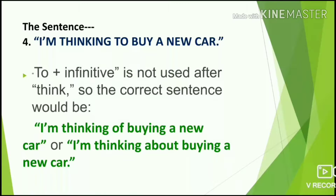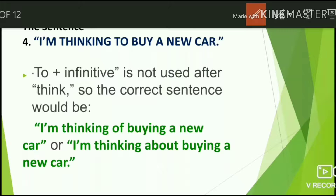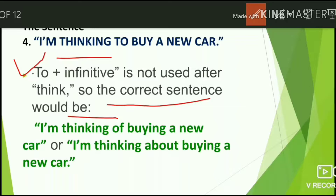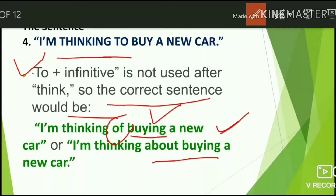Next: 'I am thinking to buy a new car.' This also looks correct on the surface but is grammatically wrong. The infinitive is not used after 'think.' The correct sentences are: 'I am thinking of buying a new car' or 'I am thinking about buying a new car.' Use 'of' or 'about' followed by the gerund (-ing form).